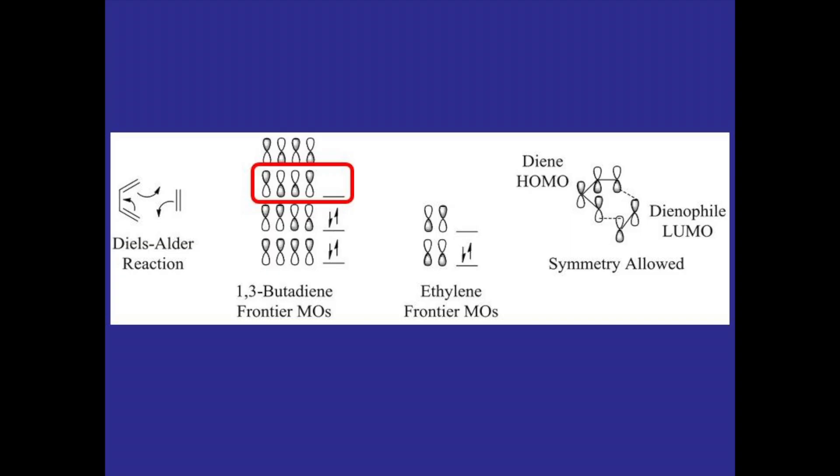The HOMO of the diene will then attack the LUMO of the dienophile and there needs to be in-phase overlap between the frontier orbitals as shown here.